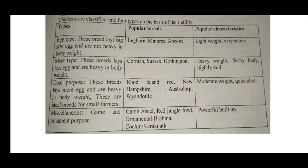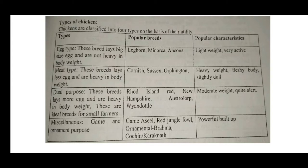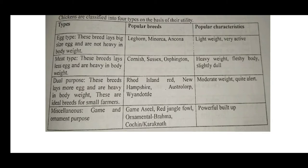Popular egg-type breeds are Leghorn, Monarca, and Corunica. Their popular characteristics are that they are lightweight and very active. The third topic is classes of chickens.